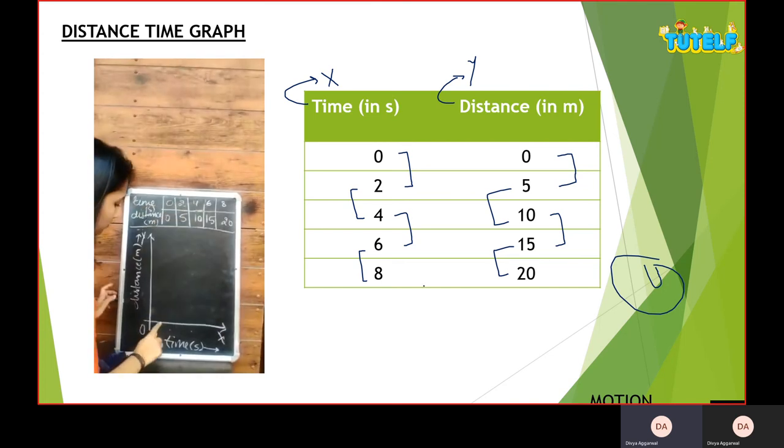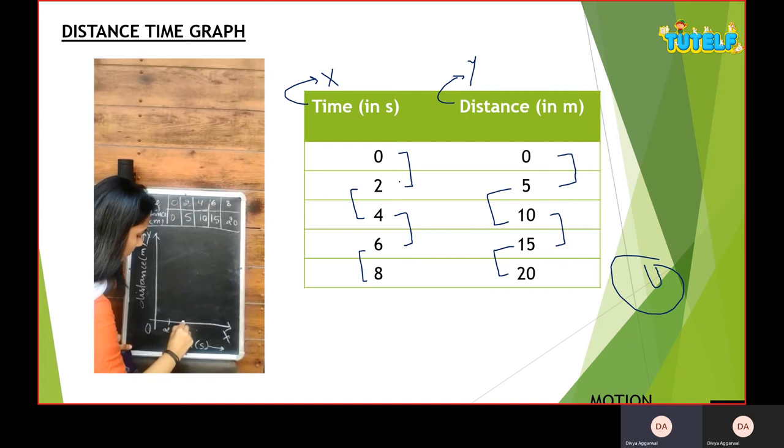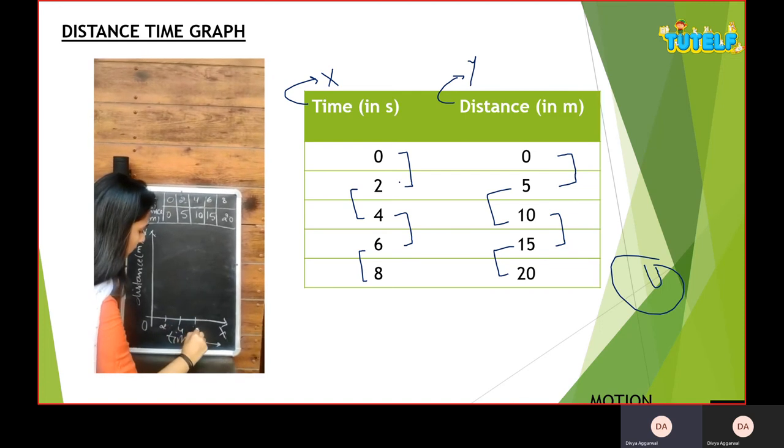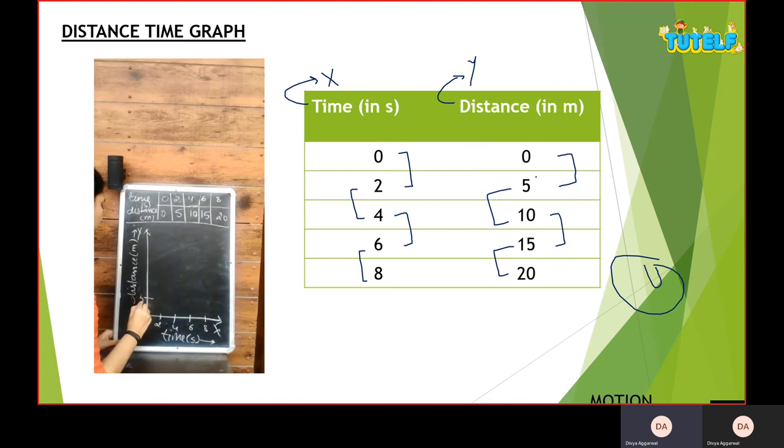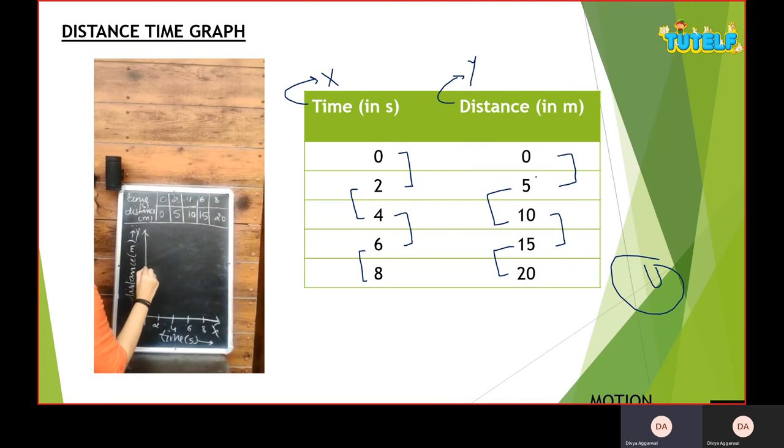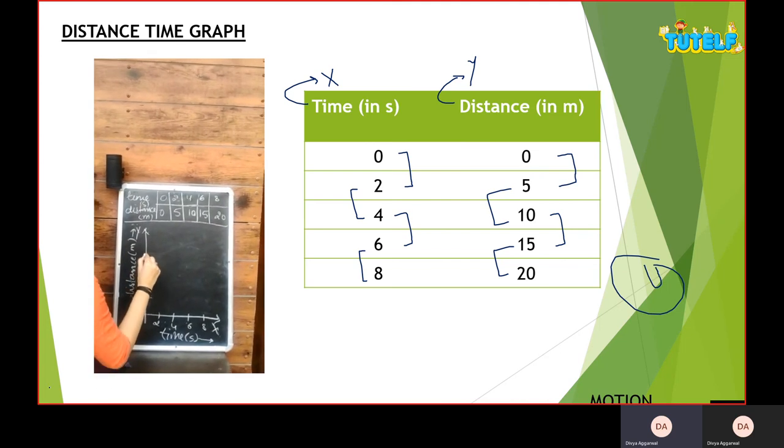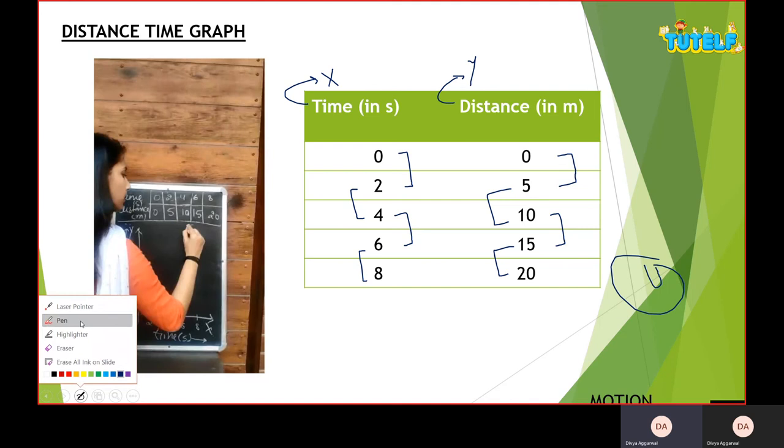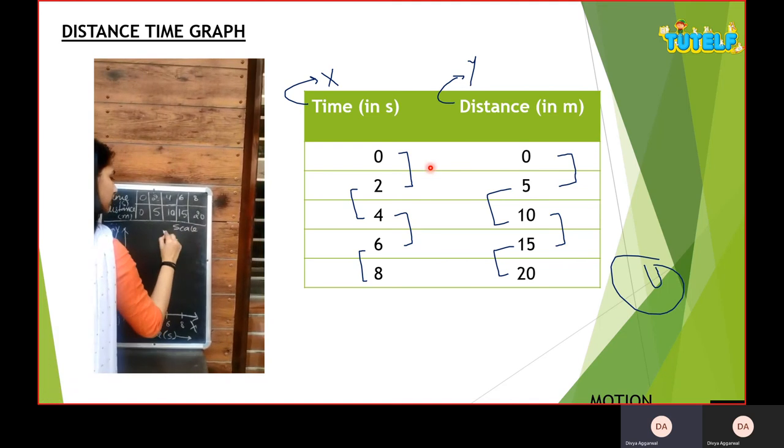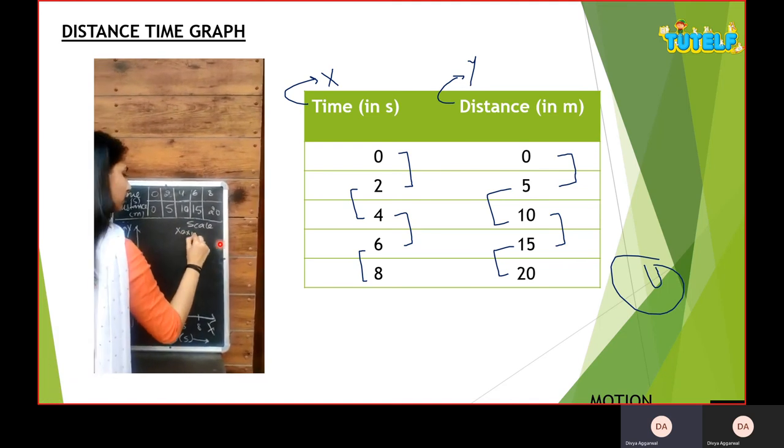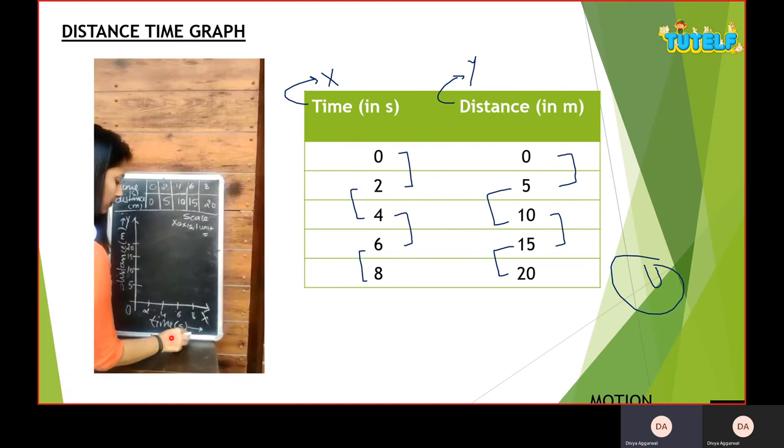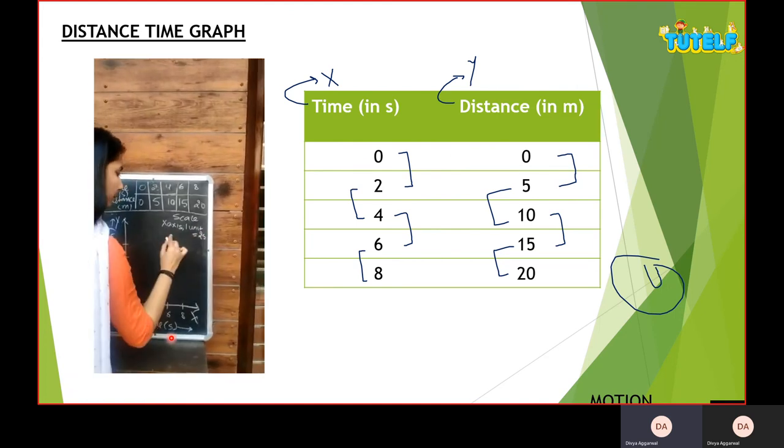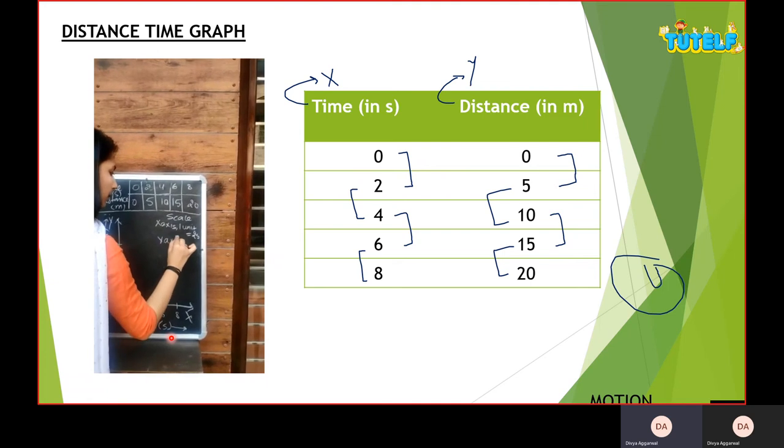The interval that I have is from zero to eight with the gap of two, so zero is written there. I'll start with two, four, six and eight. Similarly for distance five, ten, fifteen and twenty. After doing that I'll start making the points. Before that's the scale, so for x-axis I have one unit as two seconds. For the y-axis my one unit is five meters.